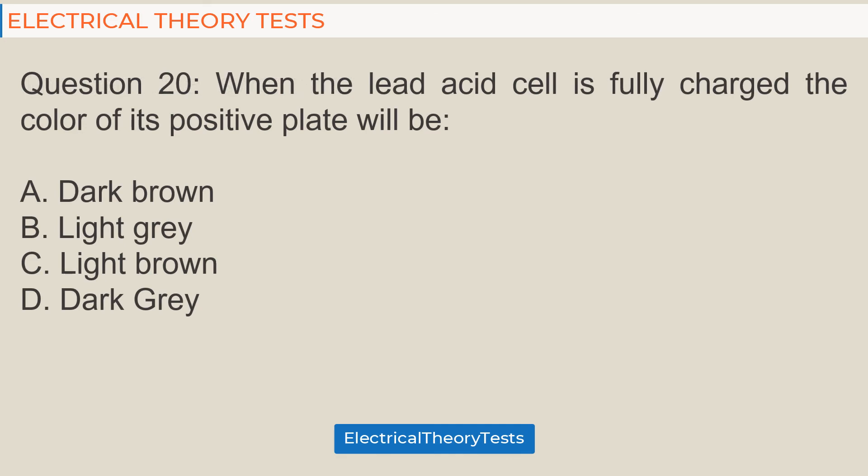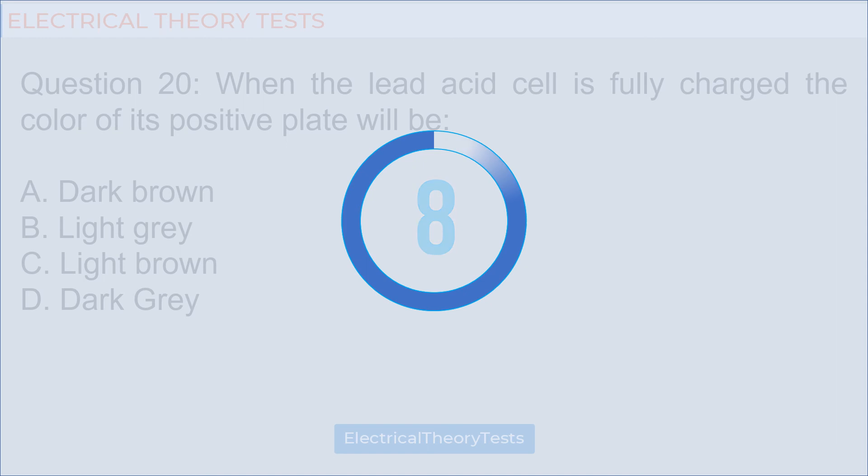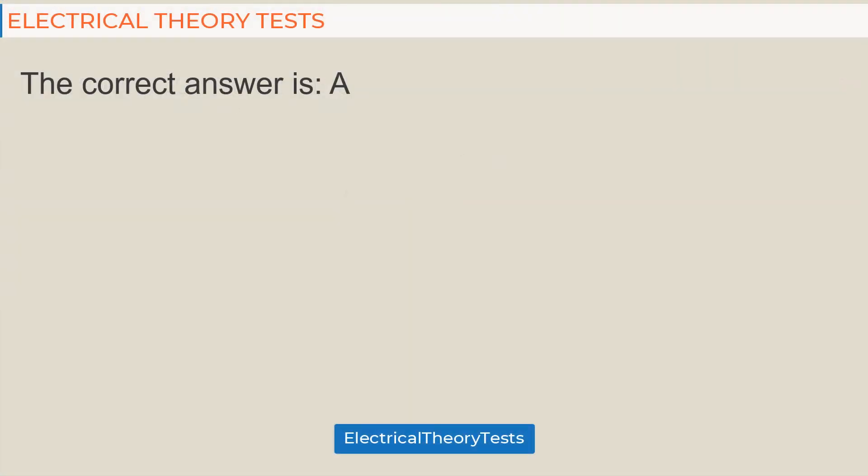Question 20: When the lead acid cell is fully charged, the color of its positive plate will be: A: Dark brown, B: Light gray, C: Light brown, D: Dark gray. The correct answer is A.